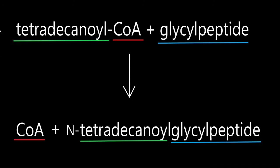And here's an example for that. We have the tetradecanoyl and the coenzyme A, and then the glycylpeptide. The peptide is any protein that's being produced in the ribosome. It can be any protein.